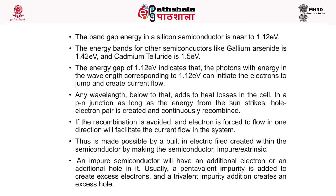An impure semiconductor will have an additional electron or an additional hole in it. A pentavalent impurity is added to create excess electrons, and a trivalent impurity addition creates an excess hole. So you can go for pentavalent or trivalent doping.